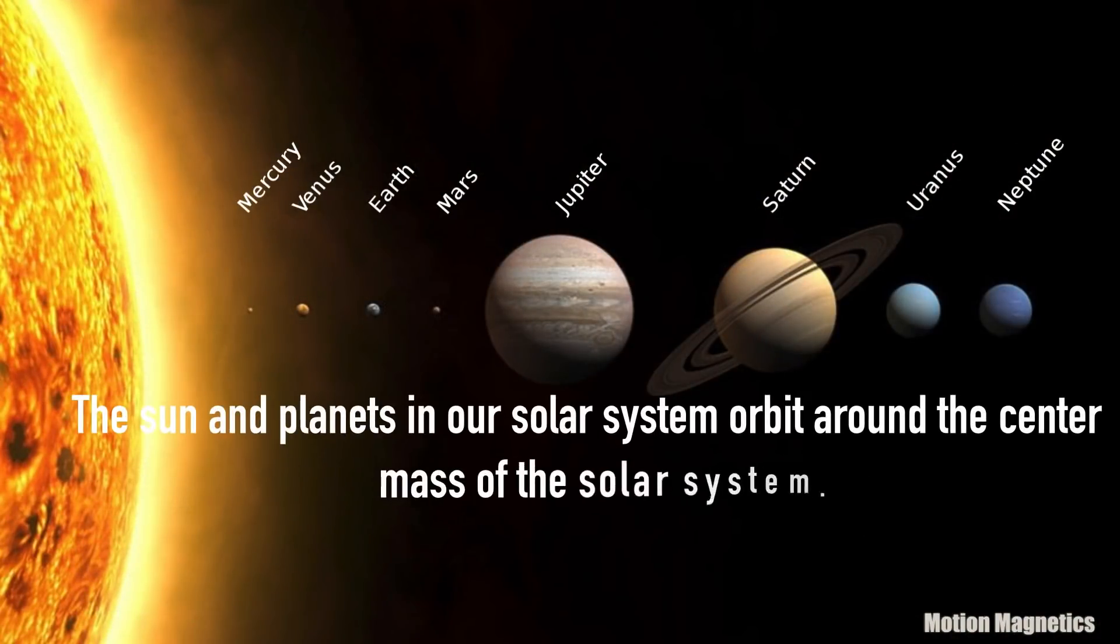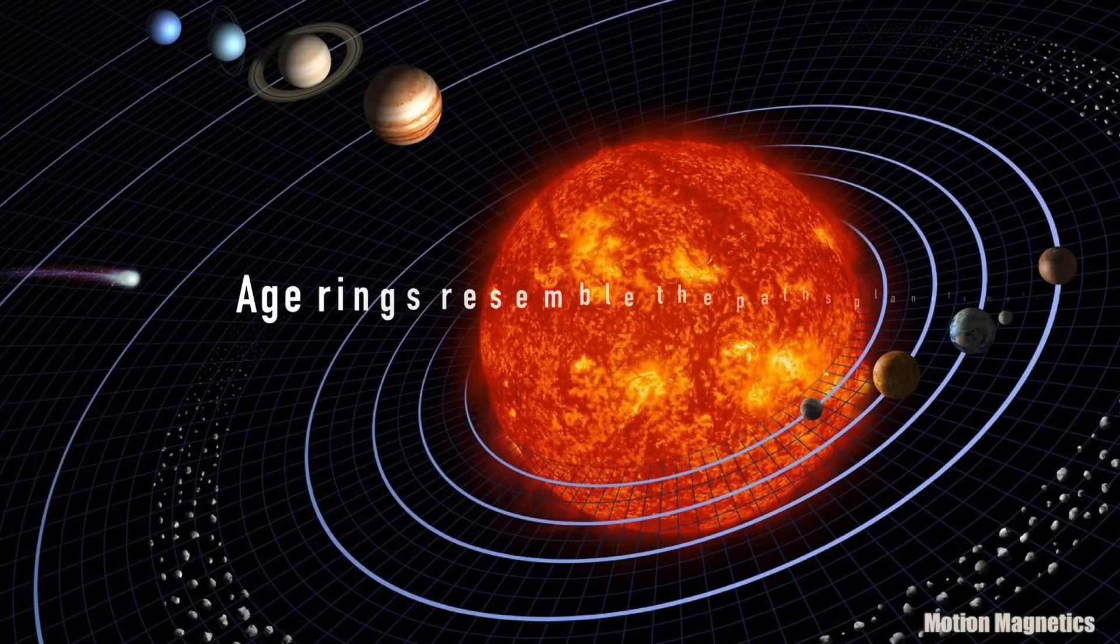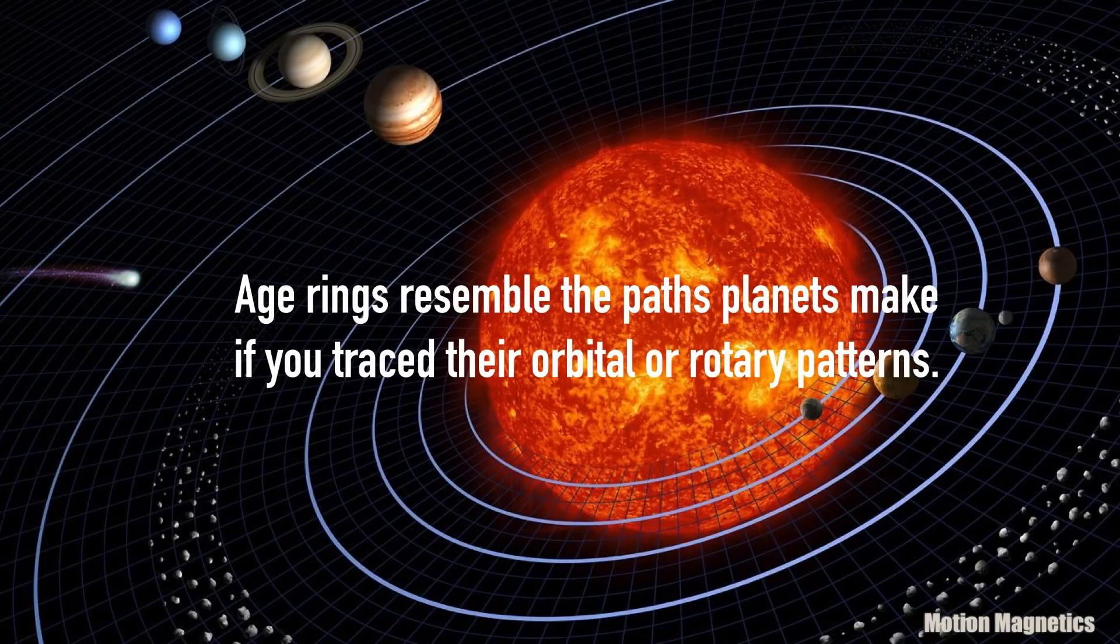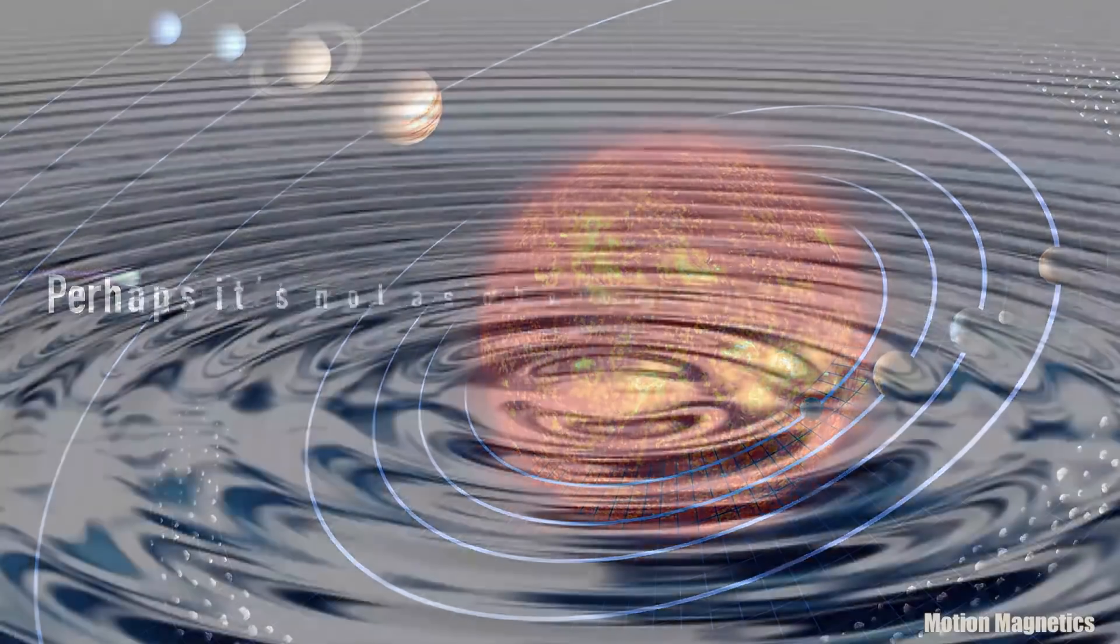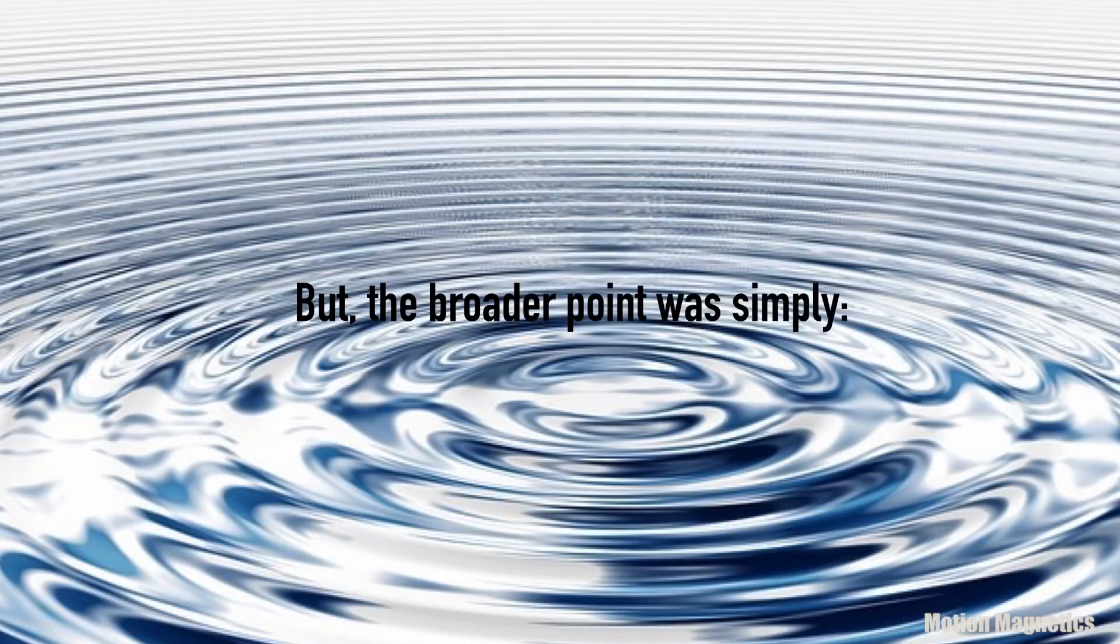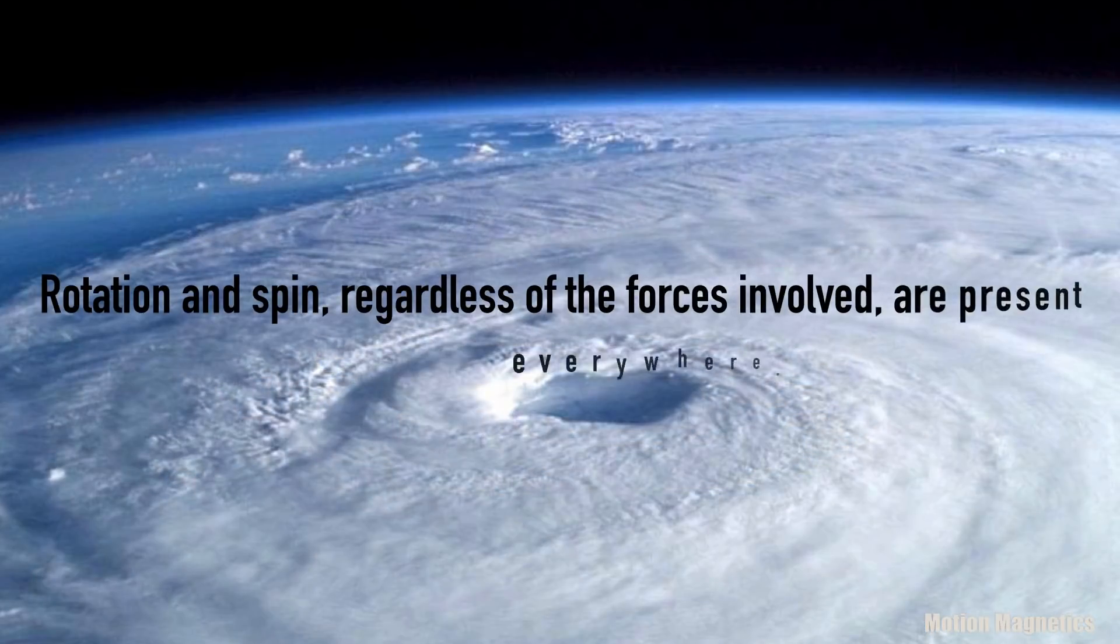The sun and planets in our solar system orbit around the center mass of the solar system. Age rings resemble the paths planets make if you trace their orbital or rotary patterns. Perhaps it's not as obvious of an example, so forgive me for the confusion, but the broader point was simply, rotation and spin, regardless of the forces involved, are present everywhere.